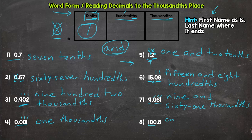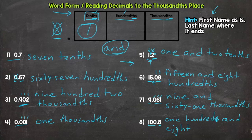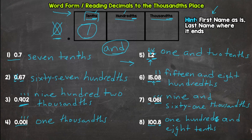The last one: the whole number is one hundred — not one hundredths, this is a whole number, so just one hundred. Then the word and for the decimal. Read to the right of the decimal as is: eight. Where does it end? It ends in the tenths place. So the answer is one hundred and eight tenths. Remember to put the word 'and' whenever you have a whole number and a decimal, to represent that decimal.